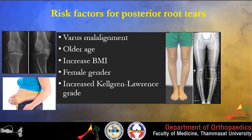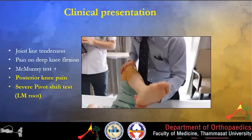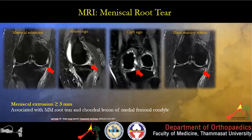These are the risk factors for posterior root tears: varus malalignment, older age, increased BMI, female gender, and increased Kellgren-Lawrence grade of osteoarthritis. On physical examination, most patients present with posterior knee pain and joint line tenderness and a positive McMurray test. For lateral meniscus root tear, the patient may have a severe pivot shift test.